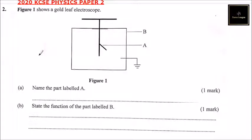This is question number two. We are told figure one shows a gold leaf electroscope. So we have a gold leaf, this is a plate, we have the container.